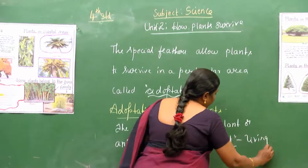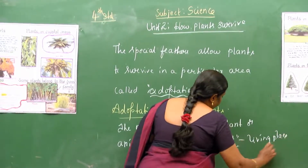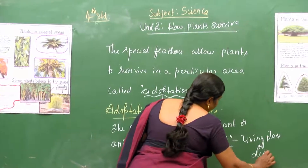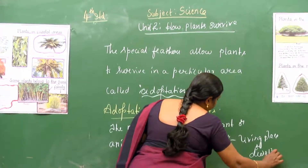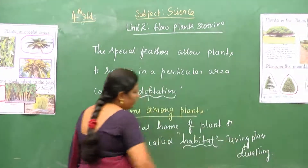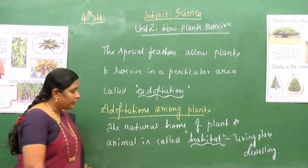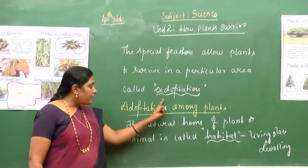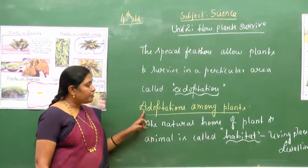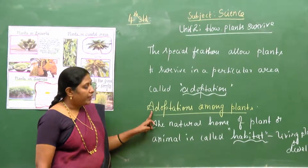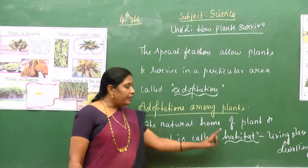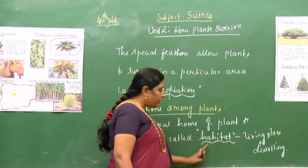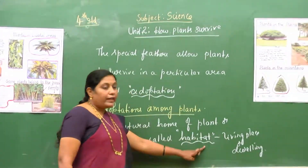The natural home of a plant or animal is called a habitat. Habitat means living place, or it is also called as dwelling. Plants have special adaptations in their body to live in a particular place or a particular habitat.